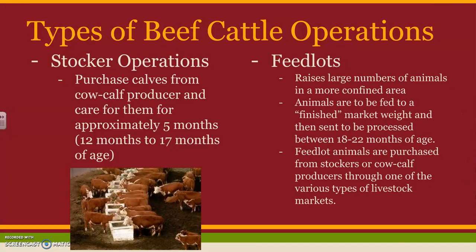Stocker operations purchase calves from cow-calf producers and then care for them for about five to six months — until they're roughly a year to about 17 months old. Feedlots are where large amounts of animals are raised in a more confined area, fed up to a market or finished weight, and then sent off to be processed somewhere between 18 to 22 months of age. Feedlots can purchase their animals from stockers or from cow-calf operations through one of the different livestock markets, which will be covered in a completely different video.